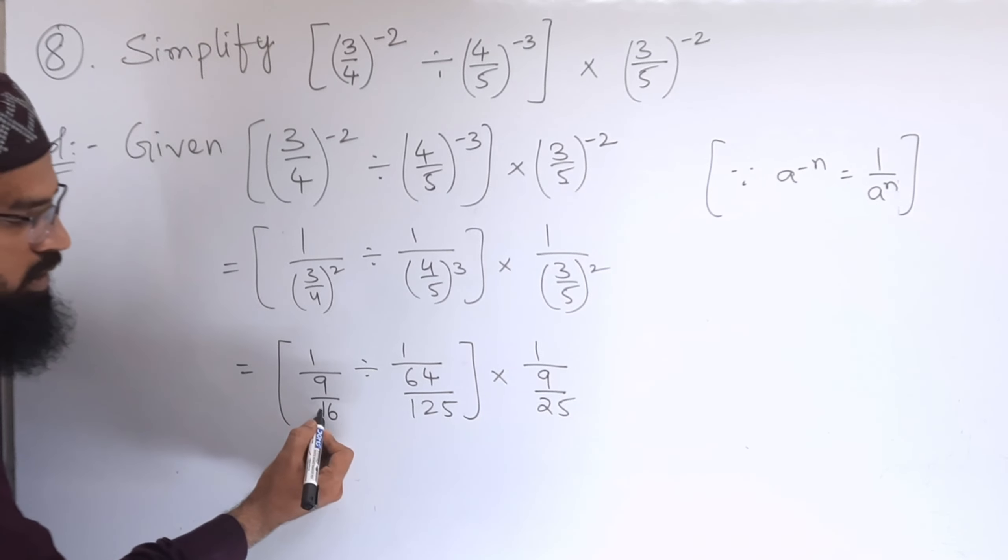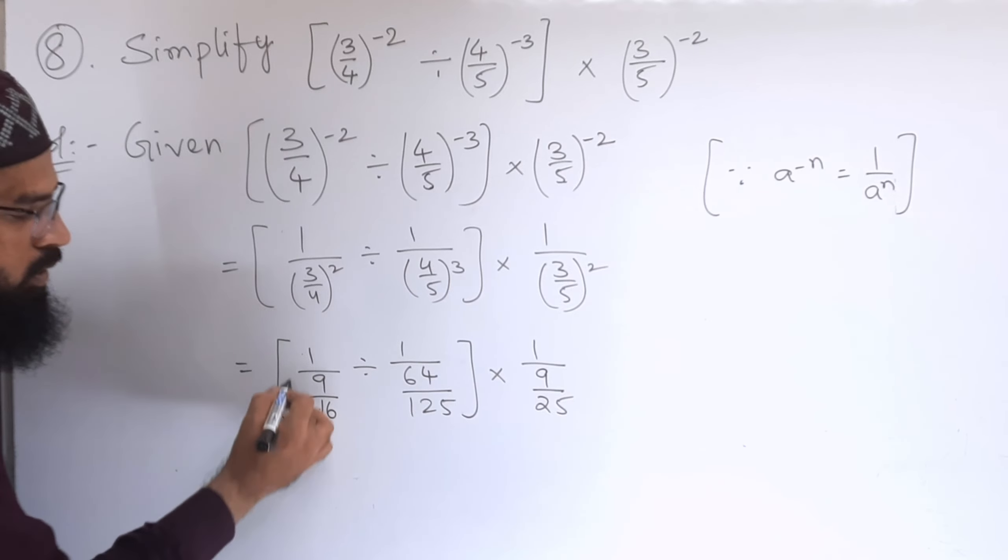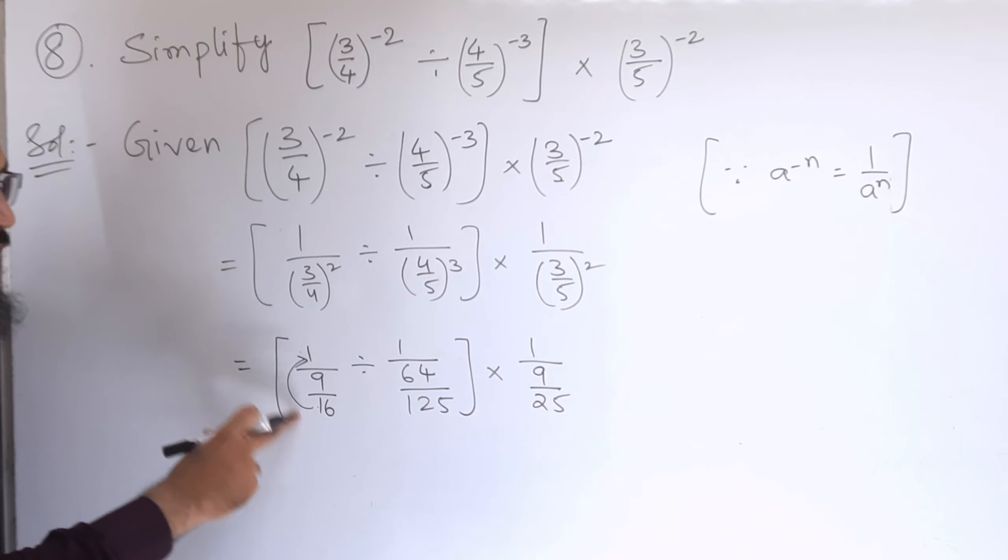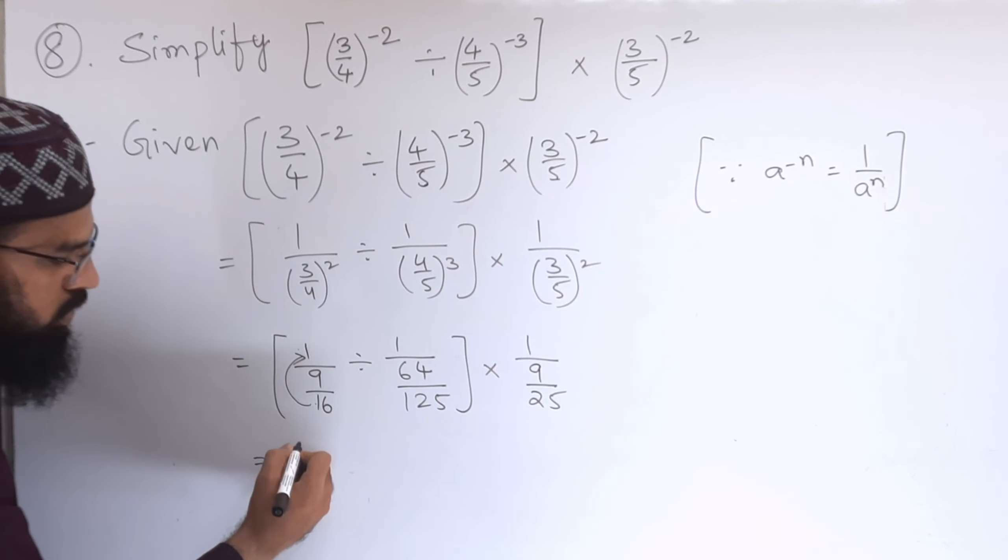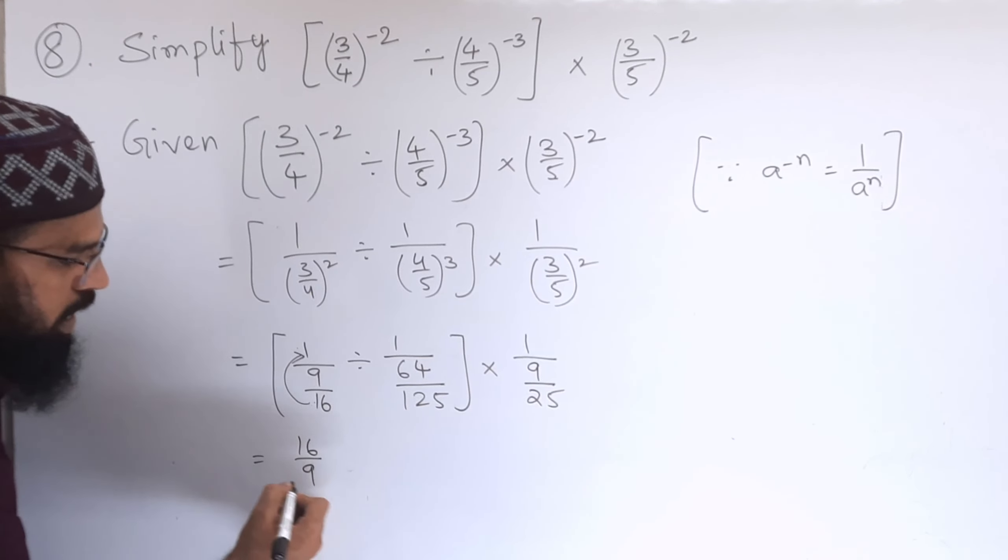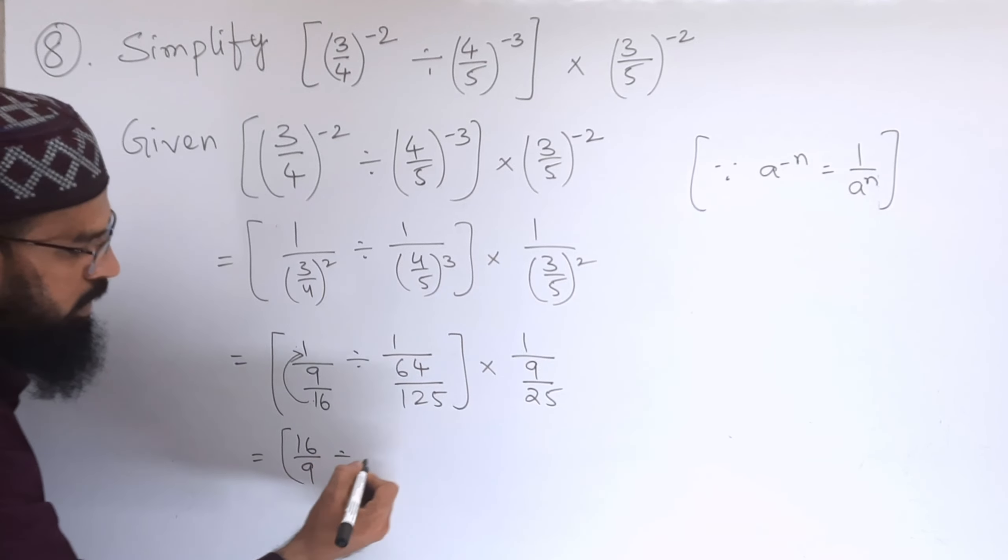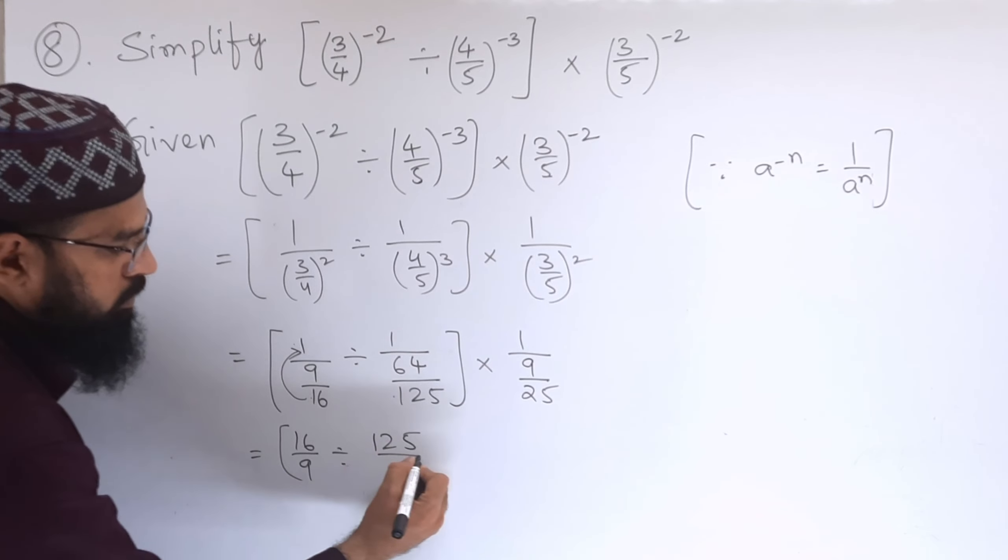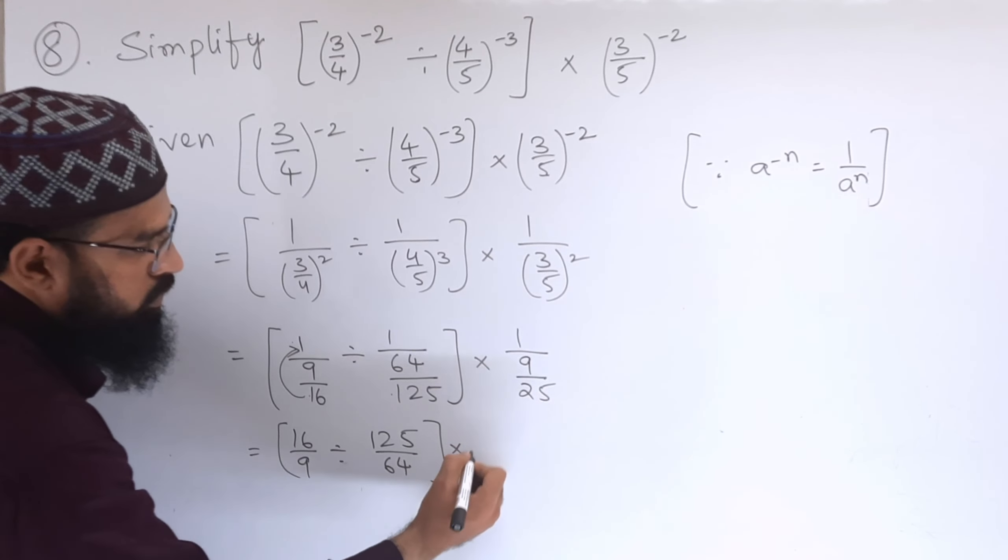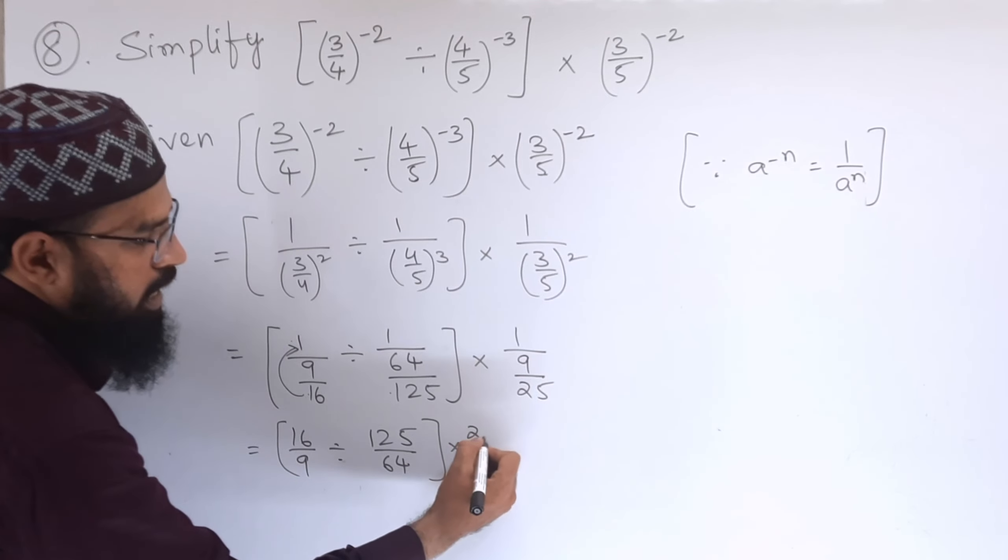Next, 16 comes here. If we write the reciprocal of this, we will get 16/9. So 16/9 divided by 125/64, 25/9.